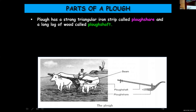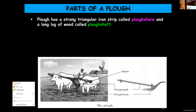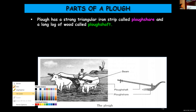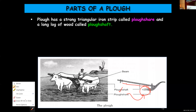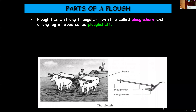In the picture you can see both plow shaft and plow share. The triangular piece of metal — iron — at one end, you call it plow share. The long piece of wood you call plow shaft. A plow has a strong triangular iron strip called plow share, because that part moves through the soil to make it loose, and the long log of wood is the plow shaft.